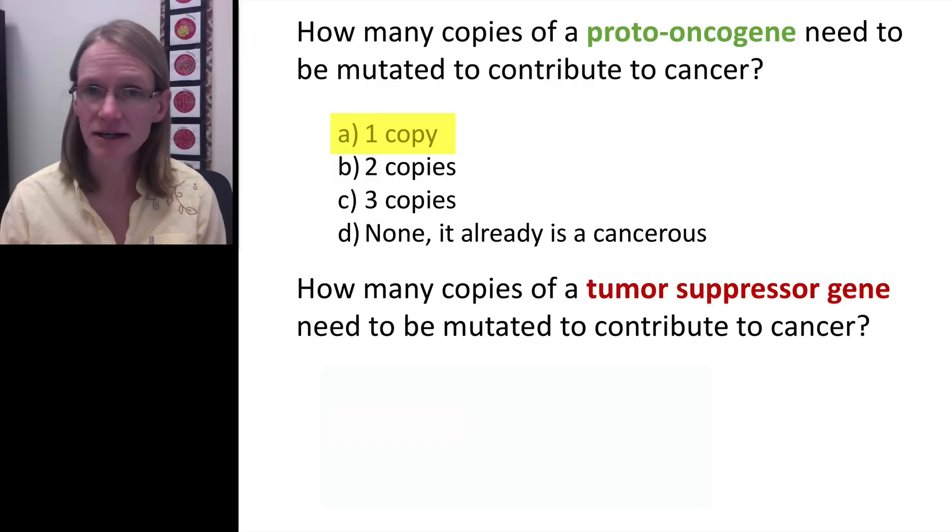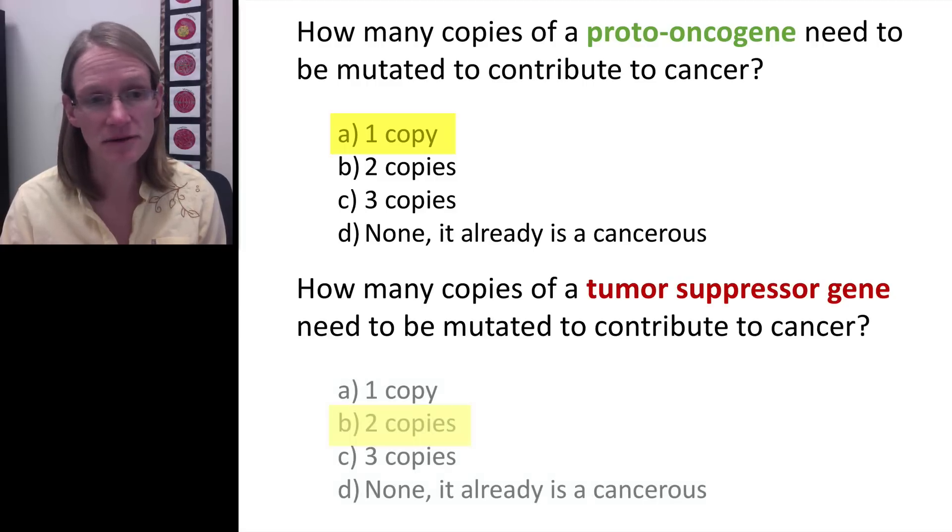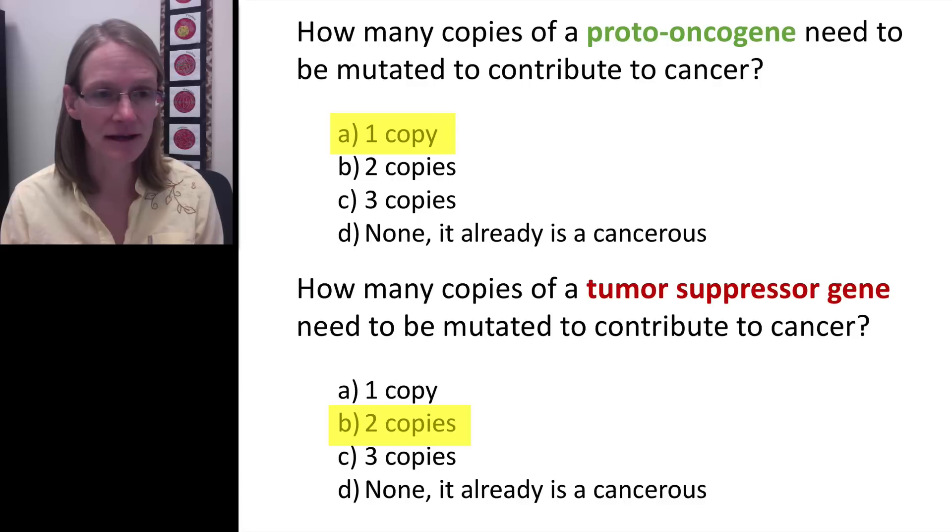Whereas if we oppose that to the number of copies that's needed of a tumor suppressor gene to be mutated to contribute to cancer, we know that it actually requires two copies because it is a recessive type of gene. And so we can consider all of these things and how they all put together in terms of the different classifications.